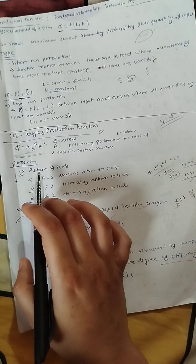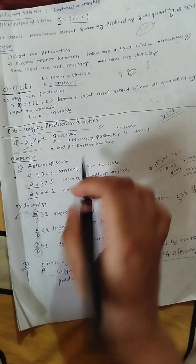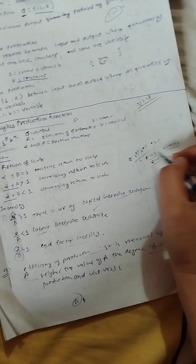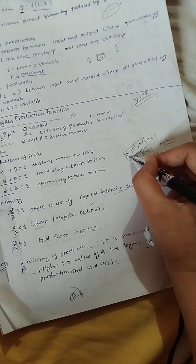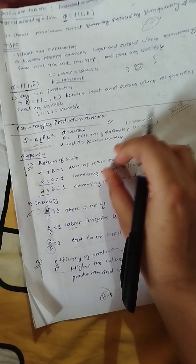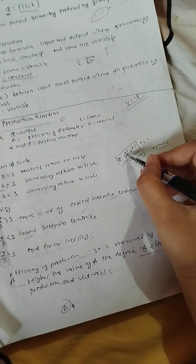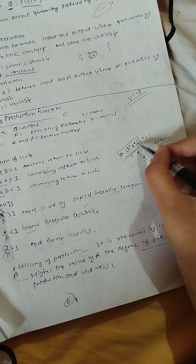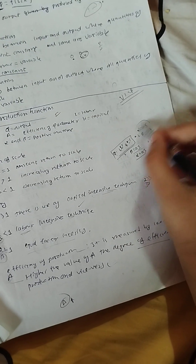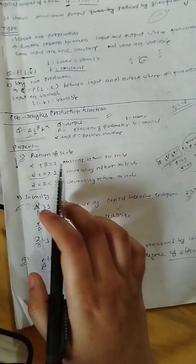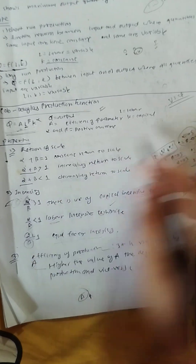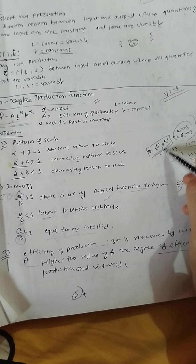Now, what kind of returns to scale does a given equation show? The given equation is Q = A · L^α · K^β. The return to scale question: here alpha is 0.5 and beta is 0.5. So alpha plus beta equals 1, which is constant - this is constant returns to scale.